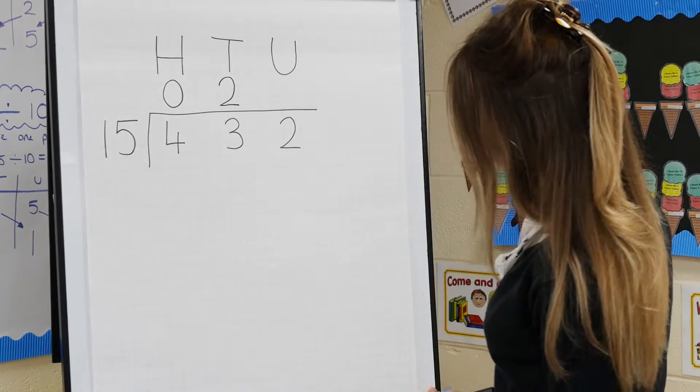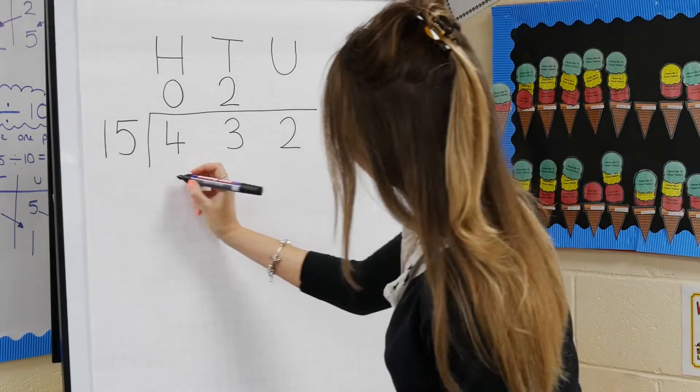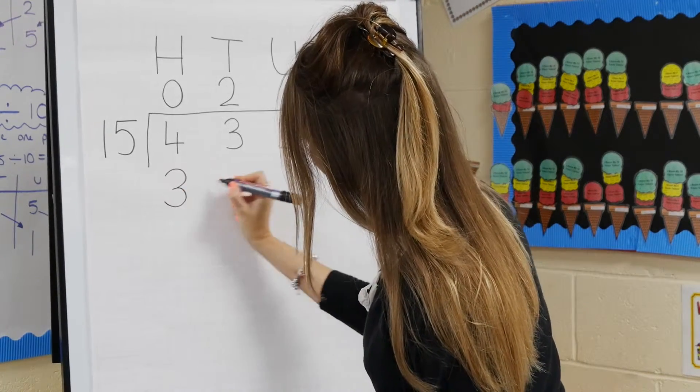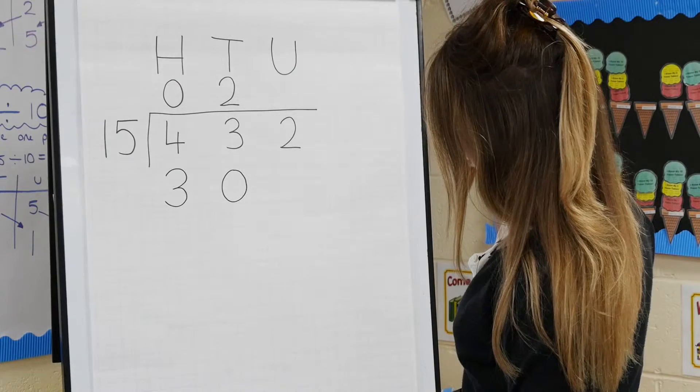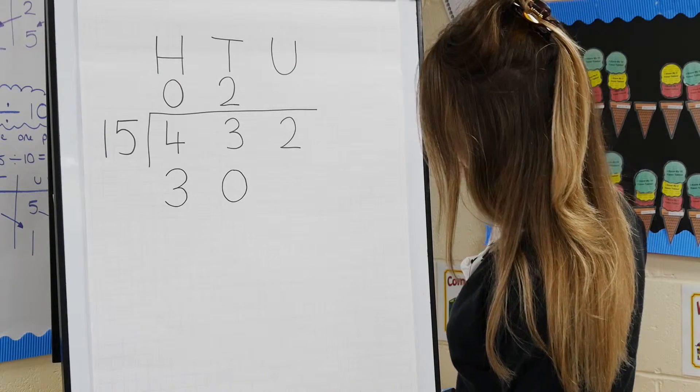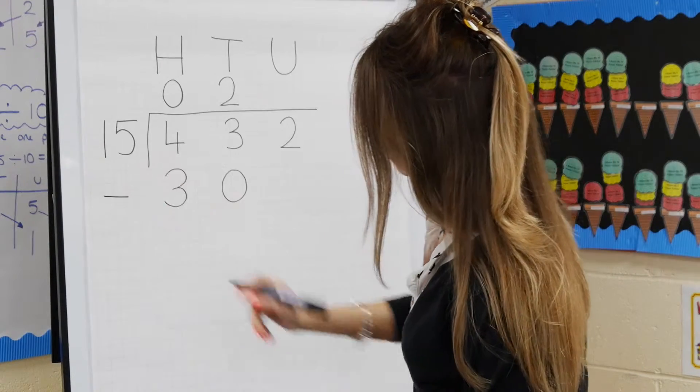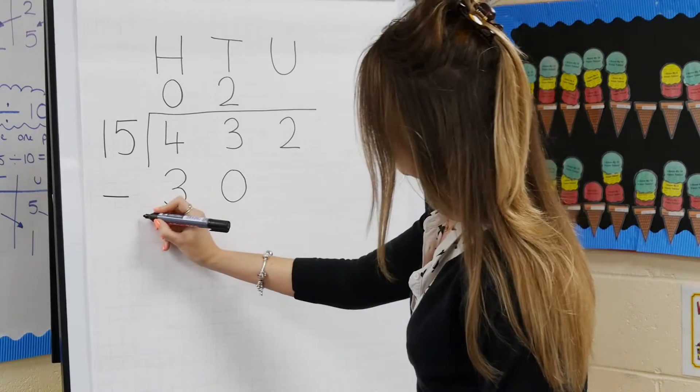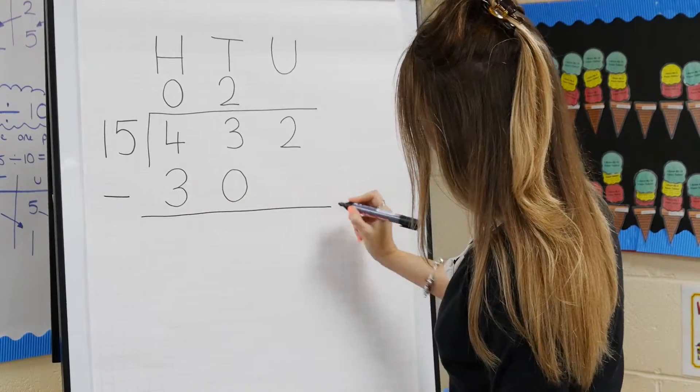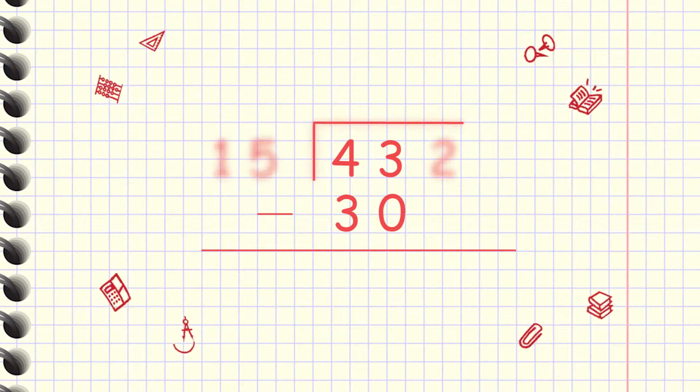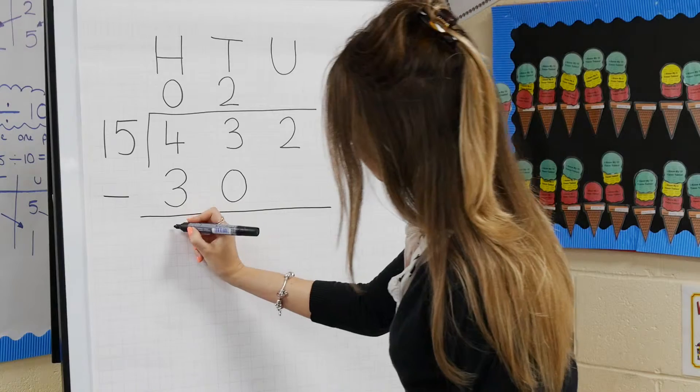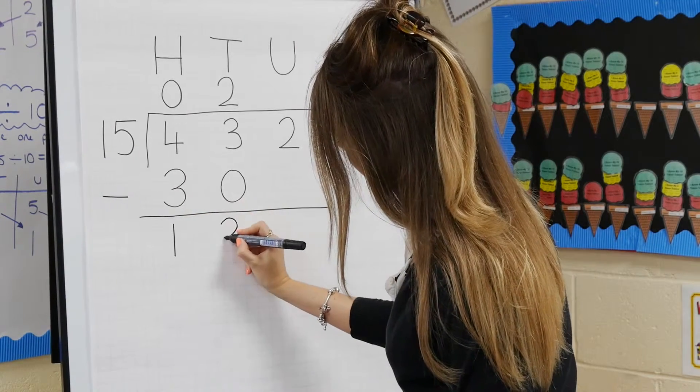And these two lots of 15 make 30, so write 30 underneath the 43 like this. Now put a subtract sign to the left of the 30 like this, and draw a line under the 30. Then subtract the 30 from the 43 to make 13, and write that underneath the line like this.